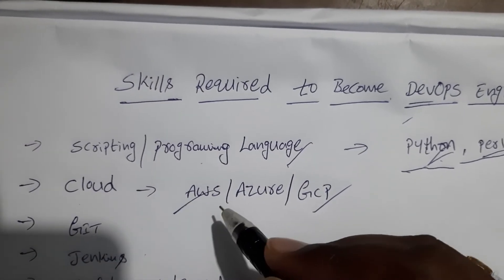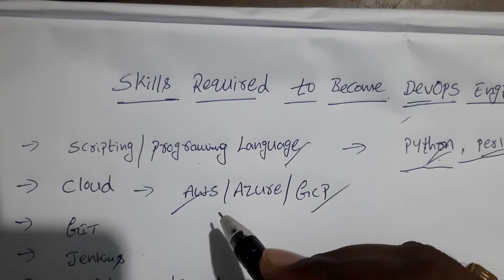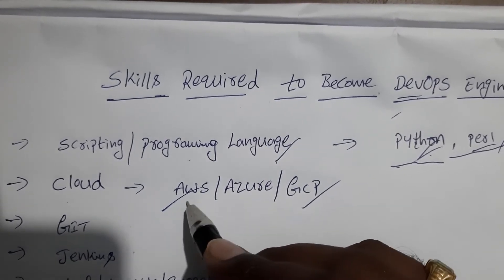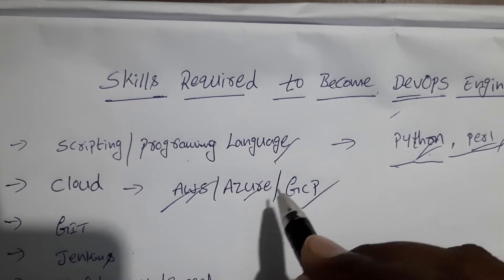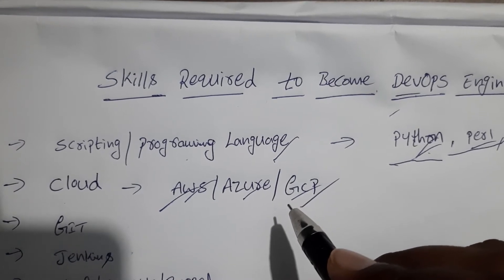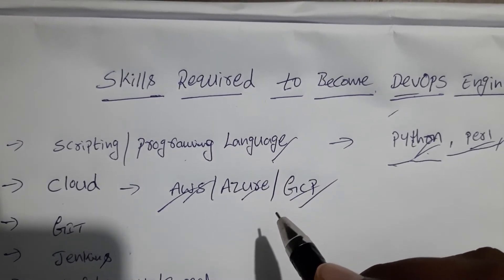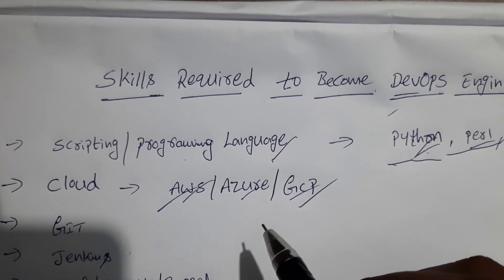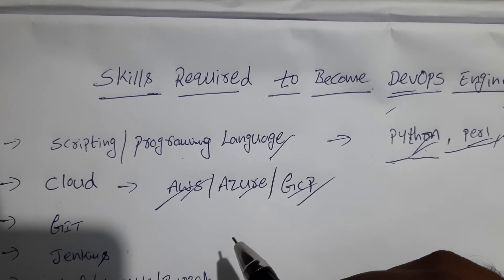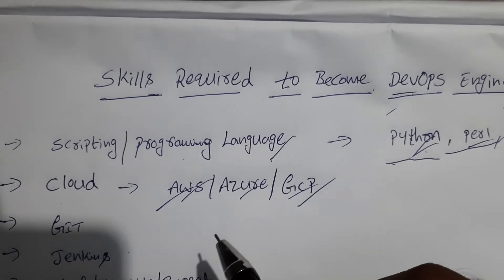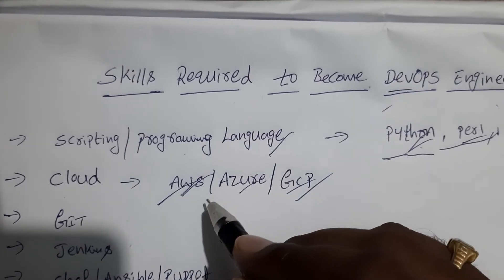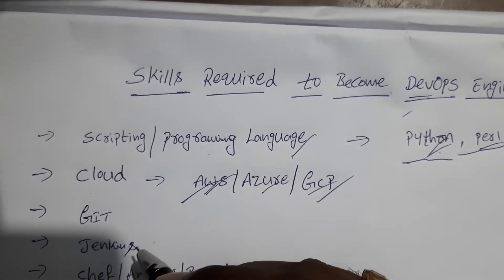The next skill is cloud technologies. Knowledge about at least one cloud infrastructure is preferred — either AWS, Azure, or Google Cloud Platform. AWS has many built-in web services dedicated to DevOps profiles like CodeCommit, CodeBuild, CodeDeploy, and CodePipeline. Nowadays in the market, AWS is a very important one.